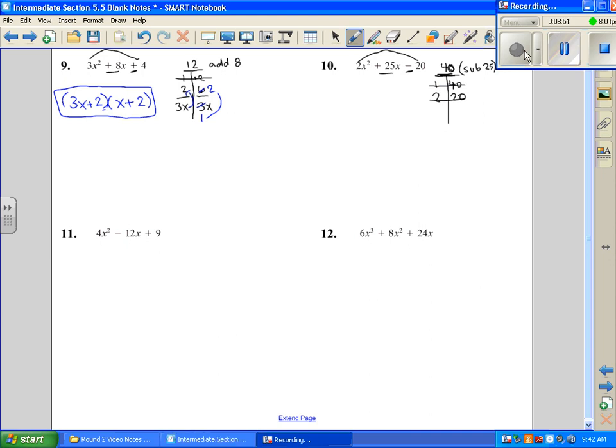And then I have 5 times 8 is 40, that won't give me 25. And I don't know of any other factors that multiply to give me 40 and subtract to give me 25. So since it's not happening and it's not possible, this does not factor and we call it prime.